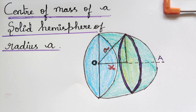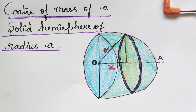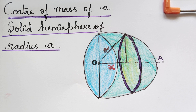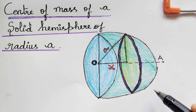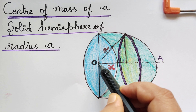Dear students, under the topic 'Center of Mass', in our previous video we found the center of mass of a thin wire in the form of a circular arc. Now in this video we are going to learn about the center of mass of a solid hemisphere of radius a. A hemisphere is a spherical shape cut exactly in half — for example, an orange cut from the center longitudinally gives a hemisphere.